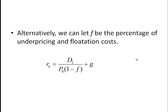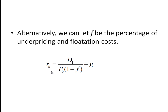Another way to write that same equation, instead of putting the net proceeds from the new issue, is to look at the percentage of underpricing and flotation costs. So if that turns out to be 10%, you take 1 minus 0.10 — that is, you take the market price and multiply it by 0.90, or 90%. So you'd use 90% of the market price as your denominator to calculate the cost of new issues of common stock.